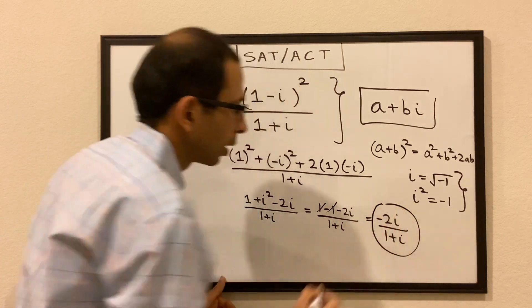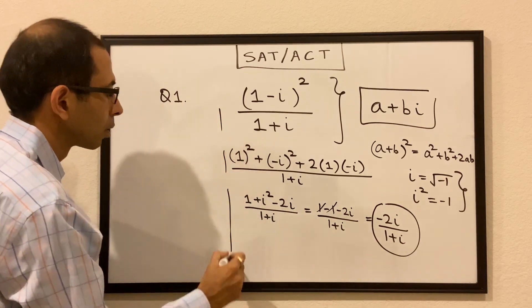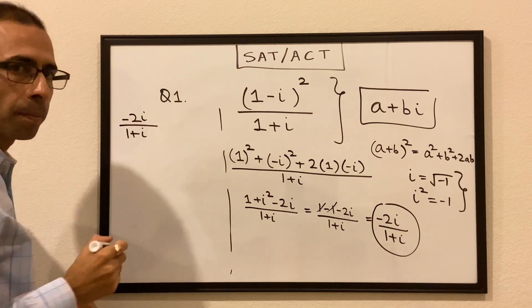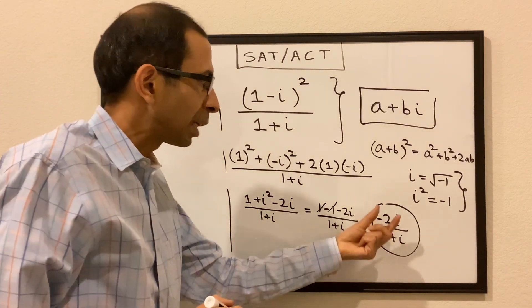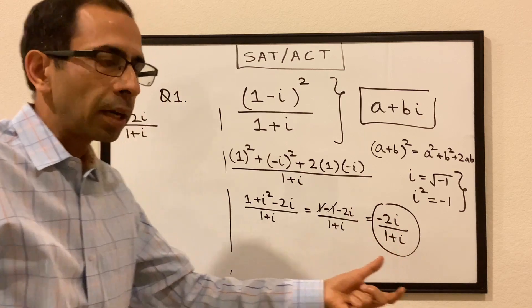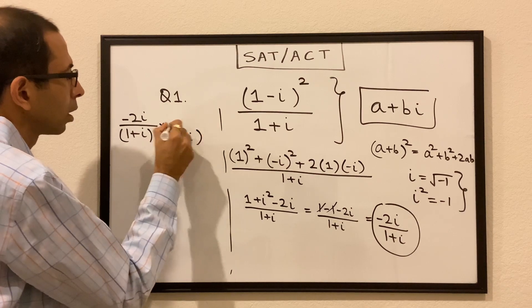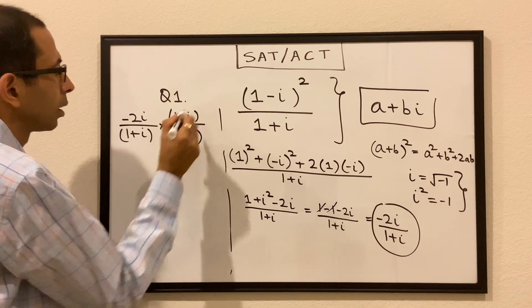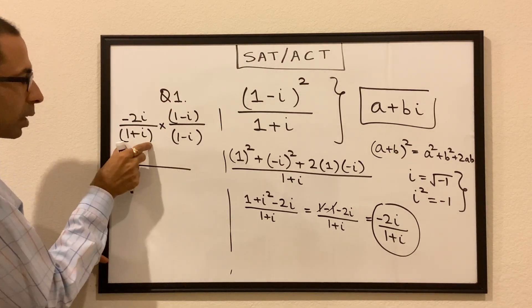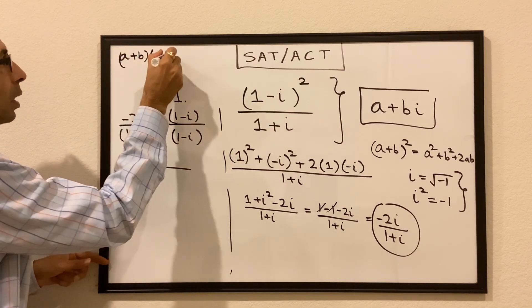Now we have -2i over (1 + i). To rationalize the denominator, we multiply the fraction by the conjugate of the denominator. The conjugate of (1 + i) is (1 - i), so we multiply both numerator and denominator by (1 - i).